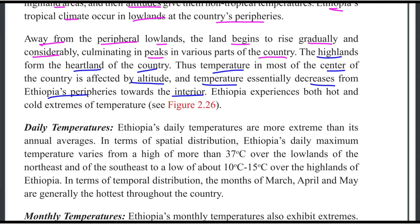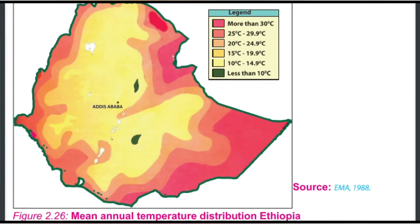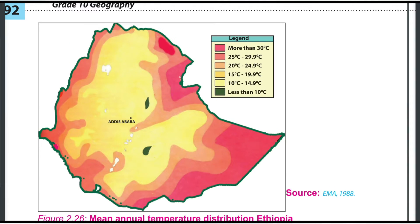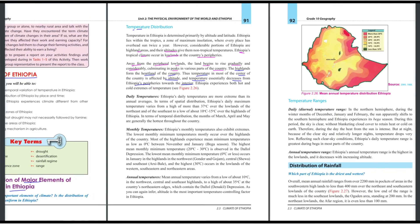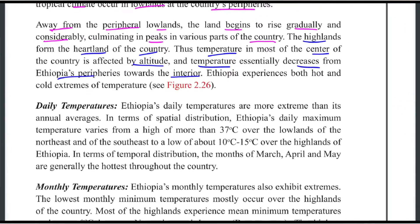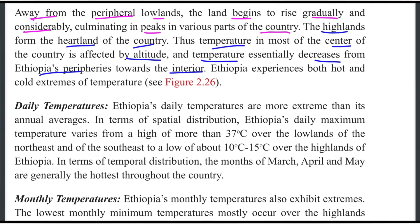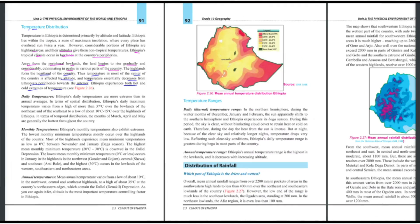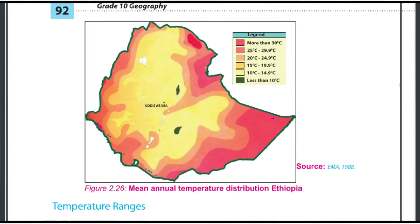Ethiopia is tropical. In the tropical zone, altitude varies from very high to very low. Ethiopia experiences both hot and cold extremes of temperature.